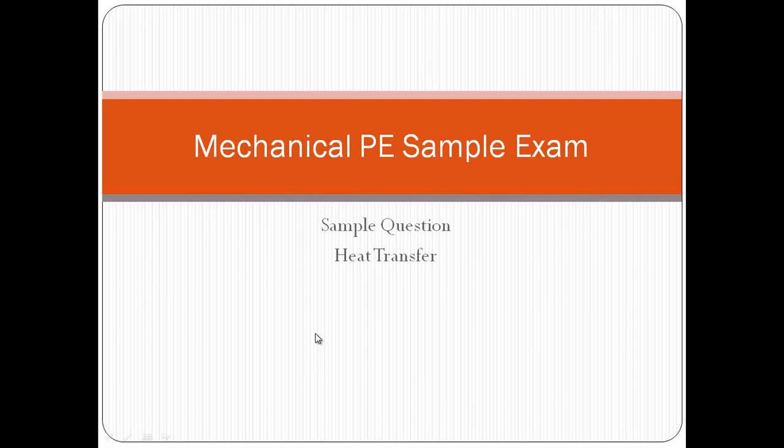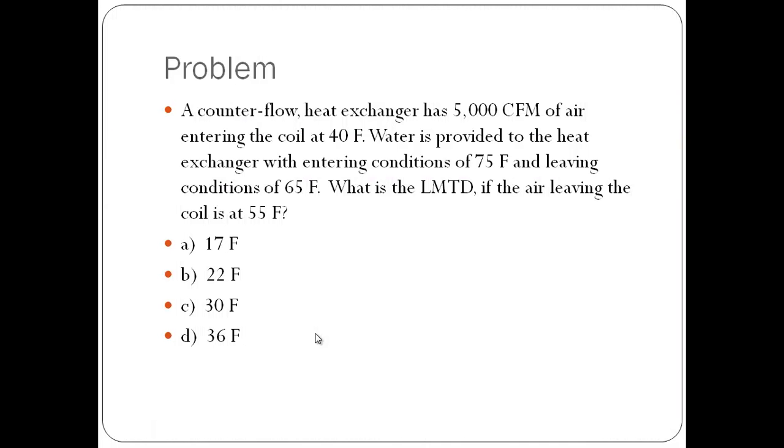This post walks you through a typical mechanical PE exam question in the category of heat transfer. The problem: a counterflow heat exchanger has 5,000 CFM of air entering the coil at 40°F. Water is provided to the heat exchanger with entering conditions of 75°F and leaving conditions of 65°F.